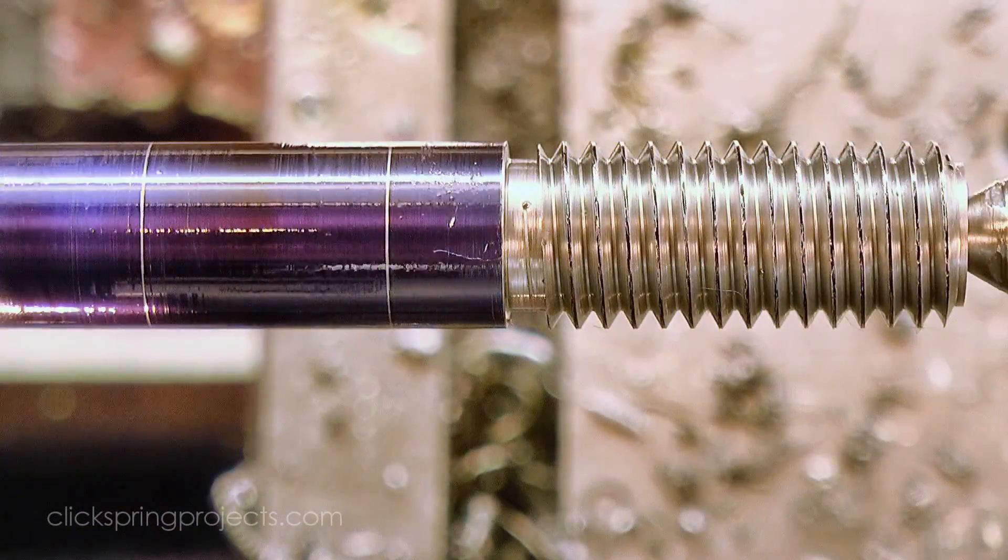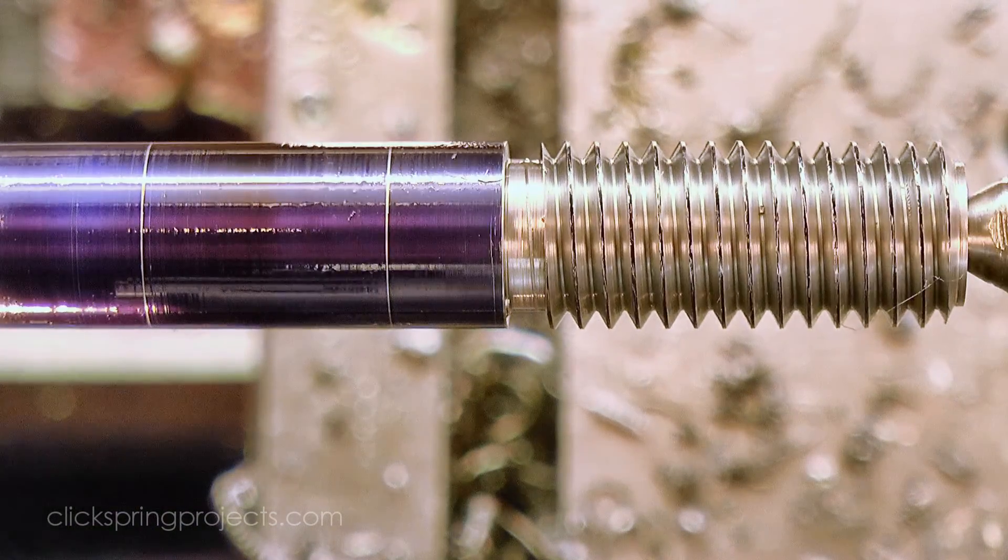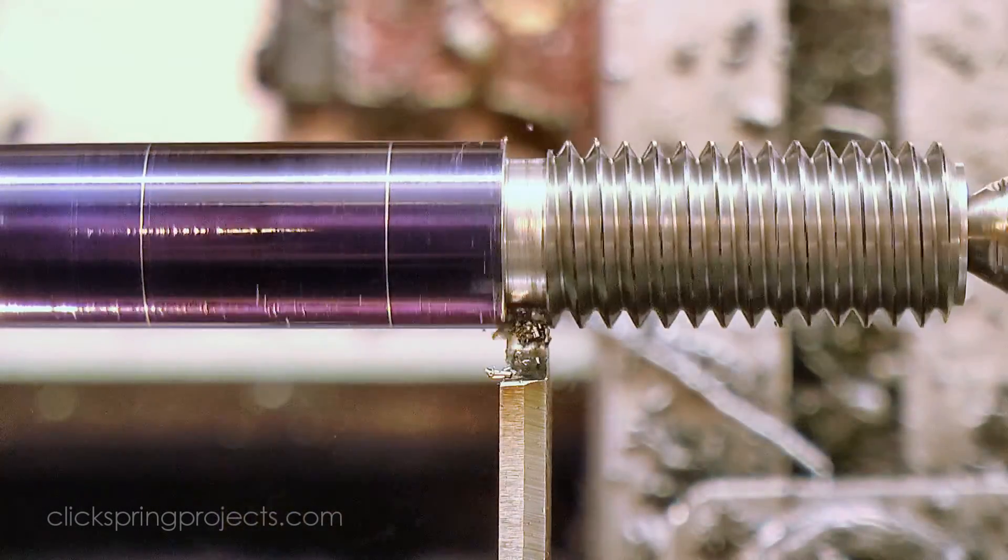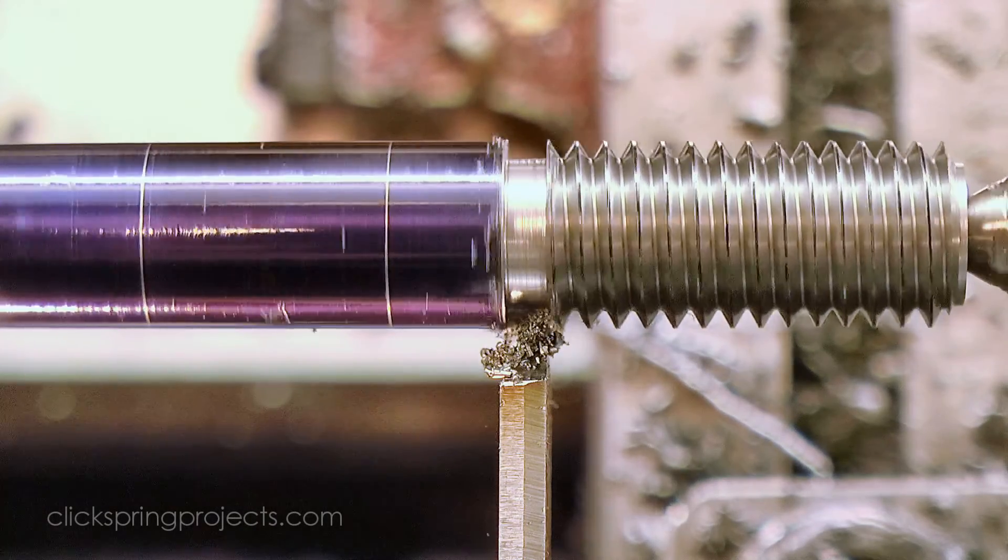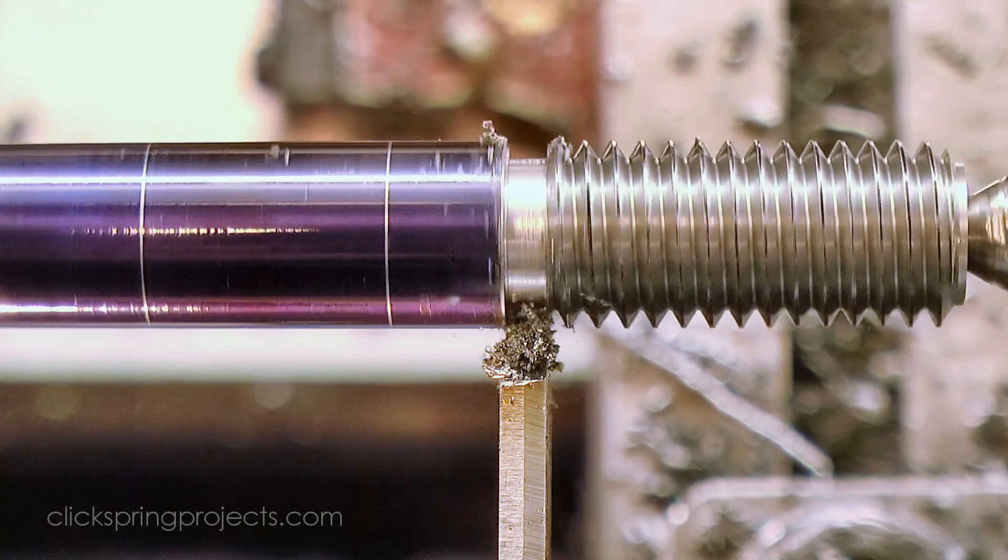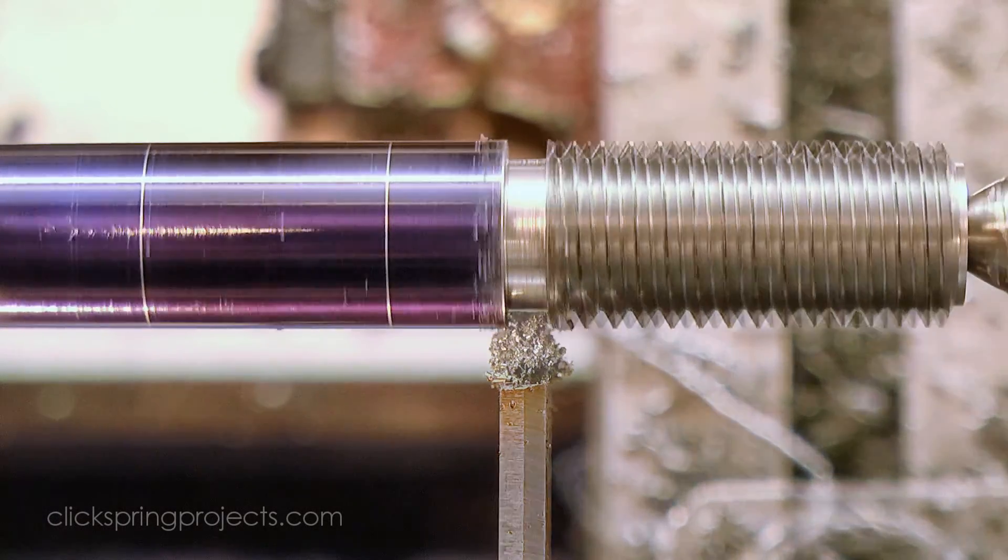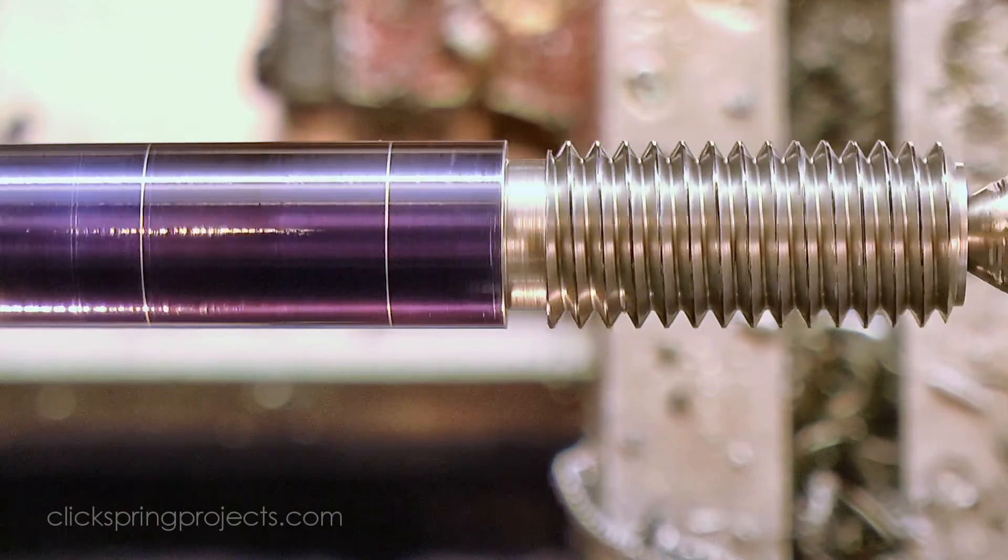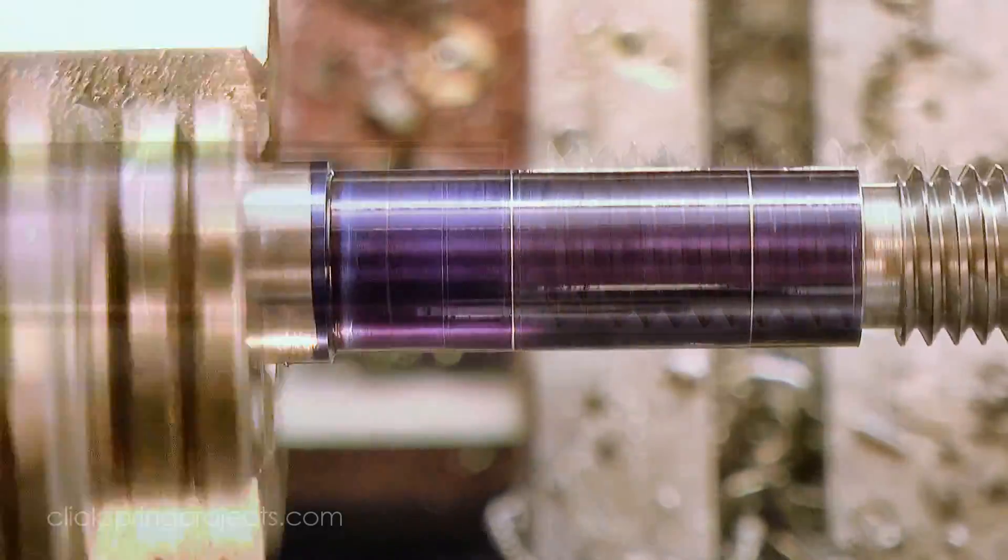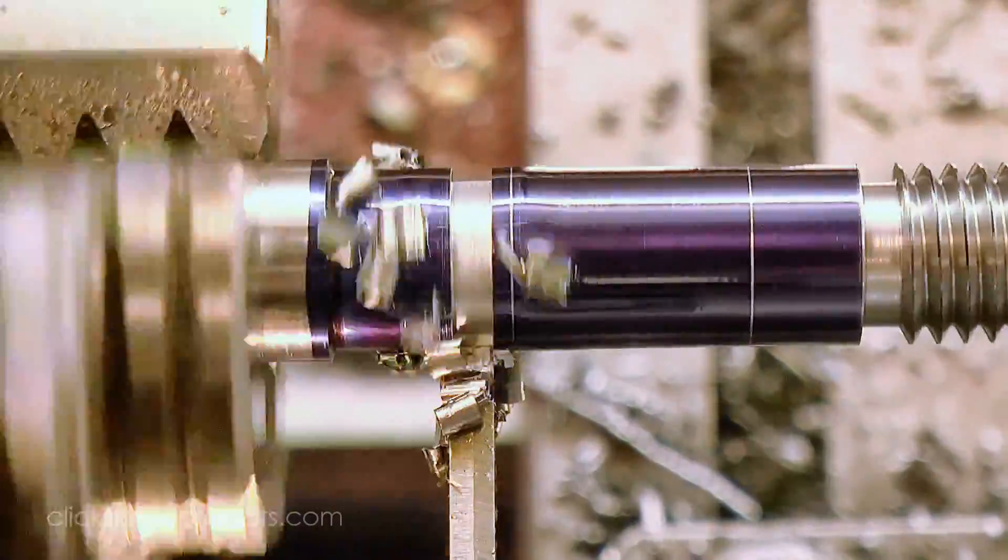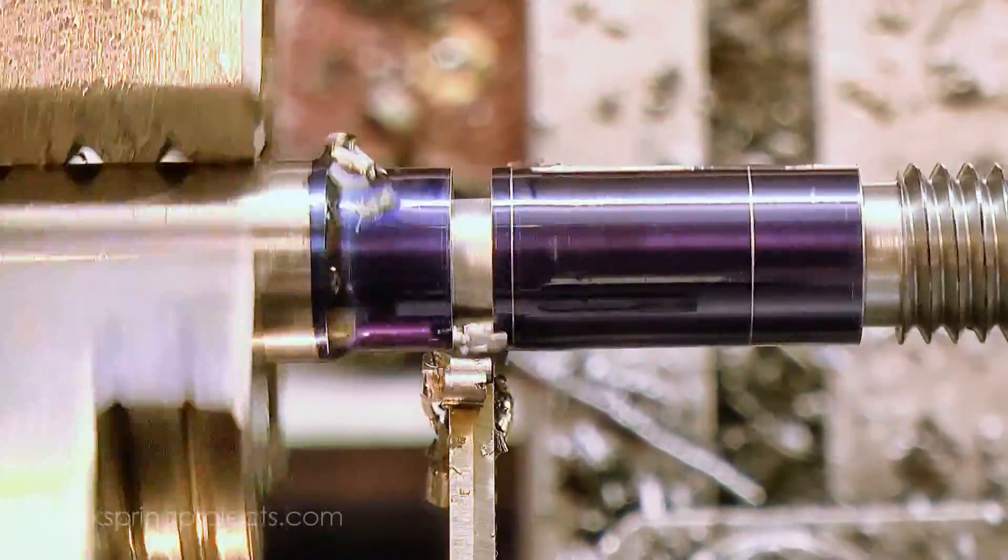And if you look closely, you can see that I've just nicked the bottom of the clearance groove. It wasn't quite at the correct depth, so that also needs a quick tidy up. And with that operation complete, the tailstock support was removed, and the work parted off.